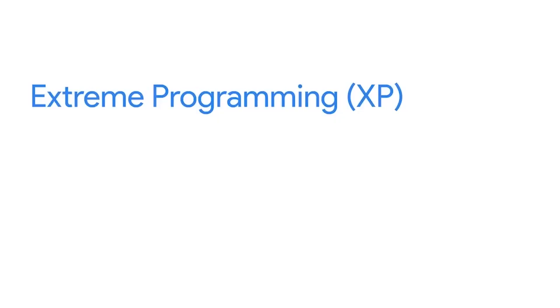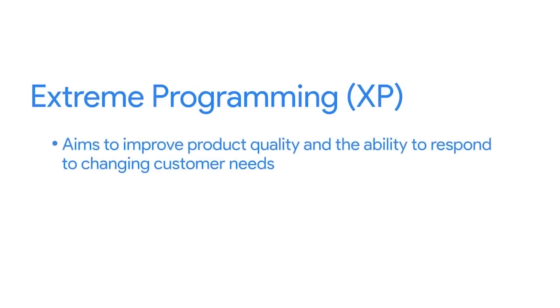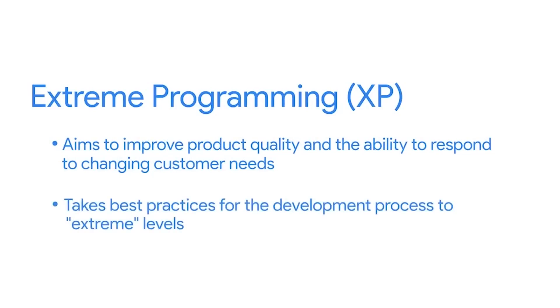Another Agile methodology is Extreme Programming, or XP. It was named that because it took traditional software development activities to an extreme level, and it also emerged at the same time as extreme sports like snowboarding. XP is another one of my personal favorites — the first Agile methodology I was introduced to back in my days working on some of the original cell phones at Qualcomm, the company behind the radio technology we all use in our phones today. Since XP came out of the software industry, it refers to specific software terms like coding and programming, but the XP method can be used in lots of non-software environments as well. The XP methodology aims to improve product quality and the ability to respond to changing customer needs by taking best practices for the development process to extreme levels.